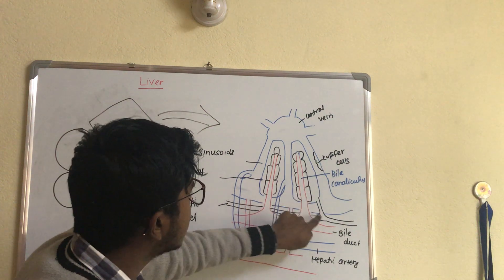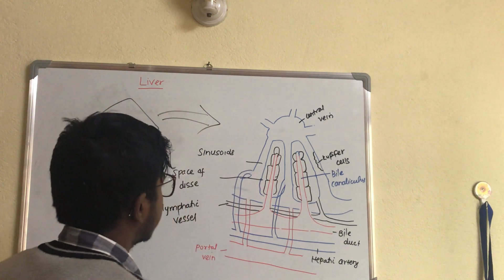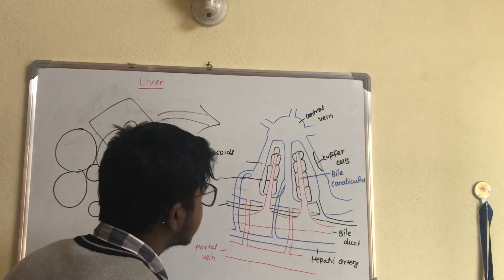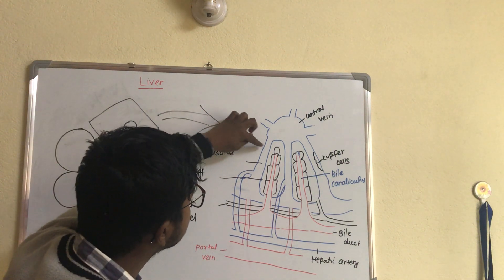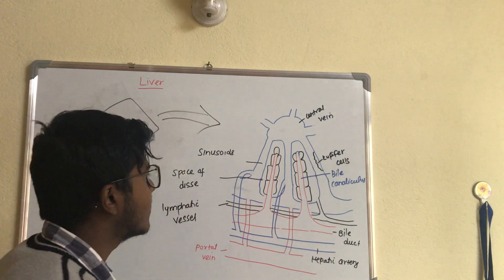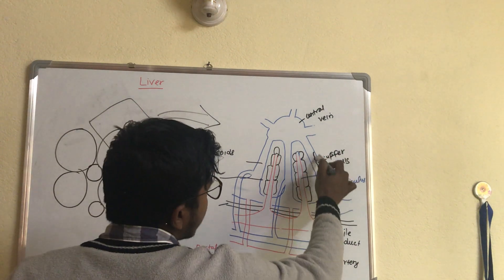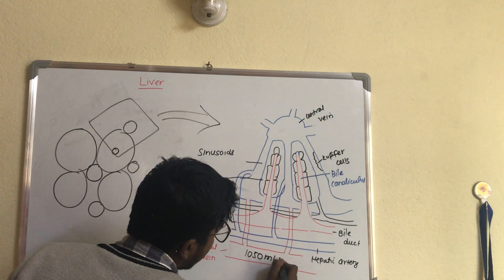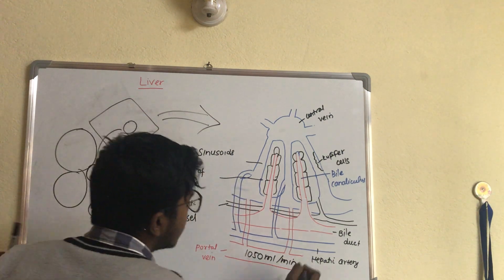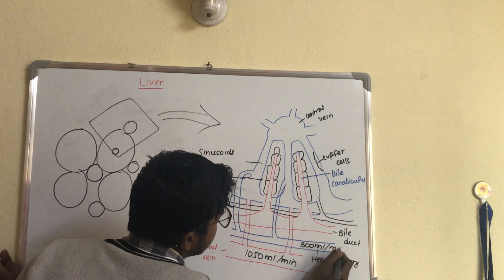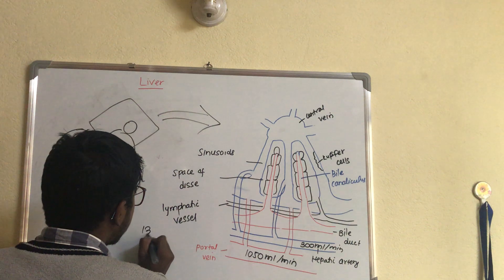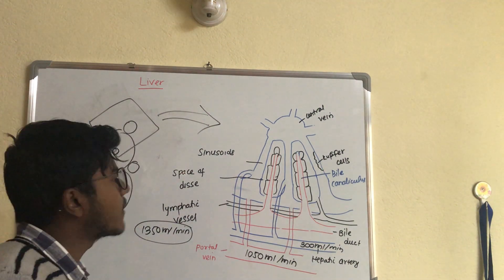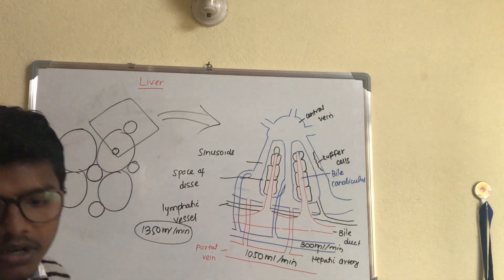The liver also receives terminal lymphatic vessels draining lymph into the space of Disse — the space between the sinusoid and the hepatocytes. Lining the sinusoids are endothelial cells, and between them are macrophages known as Kupffer cells. The portal vein supplies 1050 ml of blood per minute and the hepatic artery supplies 300 ml per minute, so the liver receives 1350 ml per minute. The weight of the liver is nearly 1.5 kg.